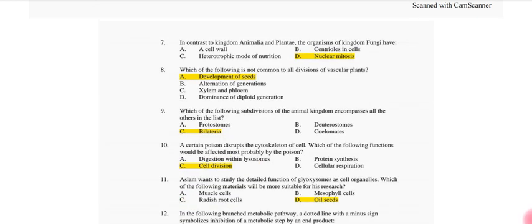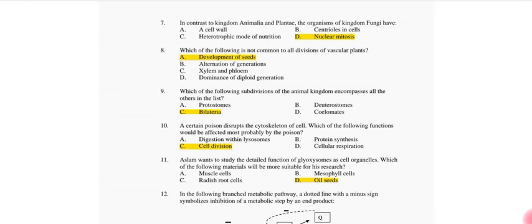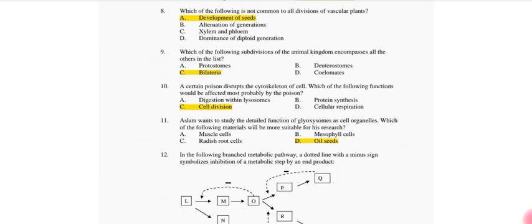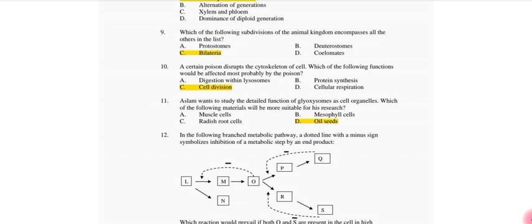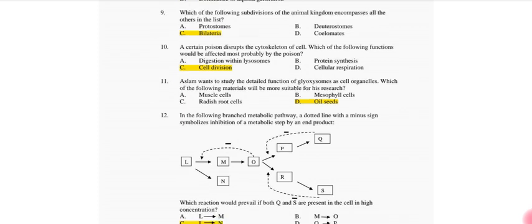In contrast to kingdom Animalia and Plantae, the organisms of kingdom Fungi have nuclear mitosis. Which of the following is not common to all the divisions of vascular system? Development of seeds. Which of the following subdivision of animal kingdom encompasses all the others in the list? Bilateria. A certain poison disrupts the Golgi apparatus. Which of the following functions would be affected most probably by the poison? Cell division.